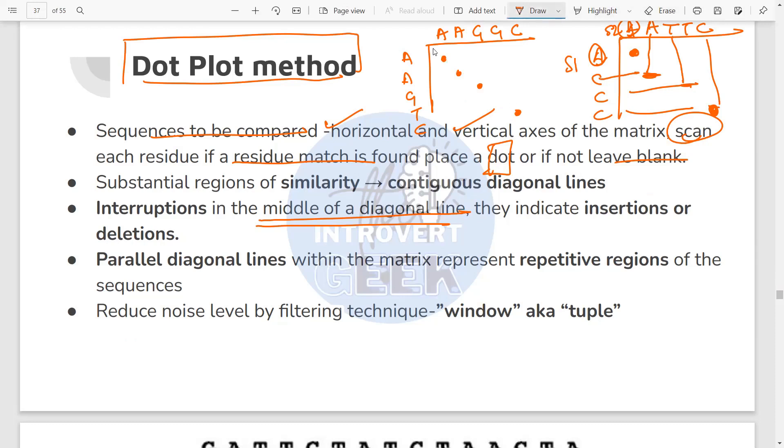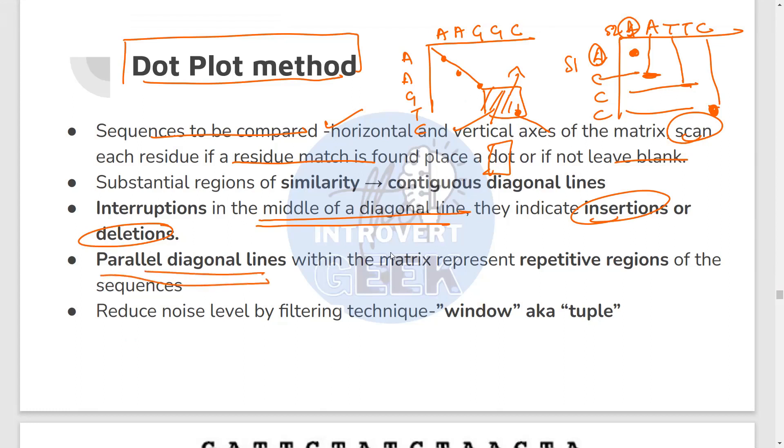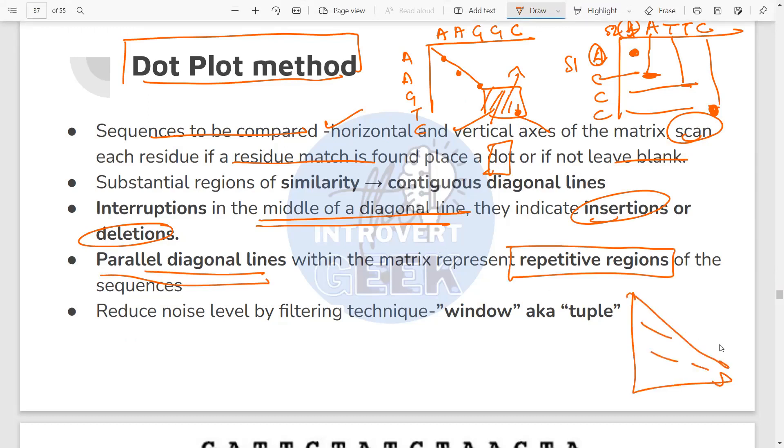Now, say suppose till here you have similarity and then further on you have similarity. There is a place where you do not have anything. You have a gap. Then this gap is representative of an insertion or a deletion. So there might have been an insertion or deletion between the two sequences because of which a gap is generated. Also, another thing is if you find parallel diagonal lines, that means that there are repetitive regions in this sequence. So if you have a middle diagonal and then you have smaller diagonals parallel to this one, then these represent repetitive regions. So in DBT paper, they give you a graph or dot matrix or they give you a sequence and they ask you to determine whether it has a similar sequence, whether there is insertion, deletion, etc. So I hope you will be able to answer that.